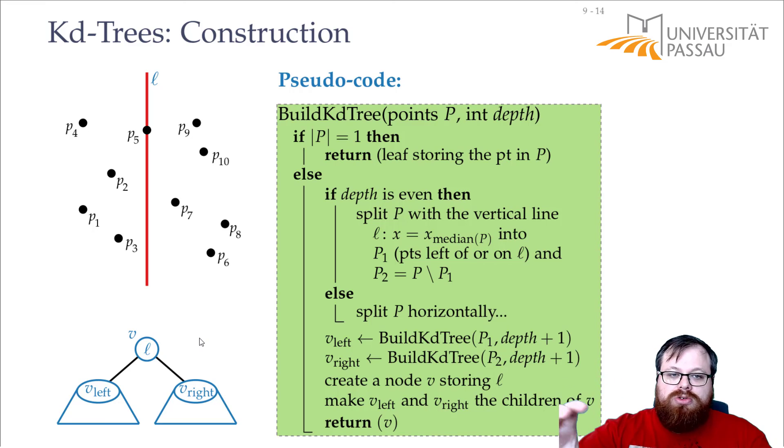Then we only have to return this node to the parent. If we are at the root, we are done, we've built the KD tree. Otherwise the parent will take this KD tree and add it as a left or right child. And this way we finish the construction.